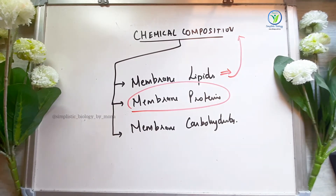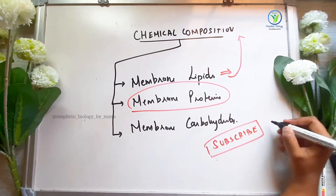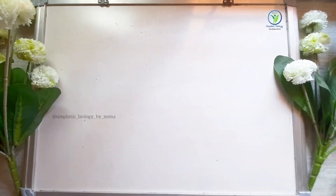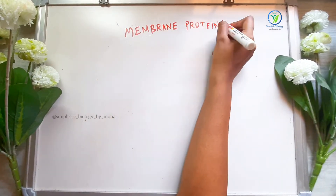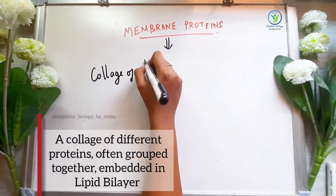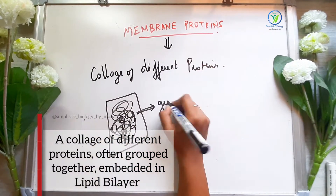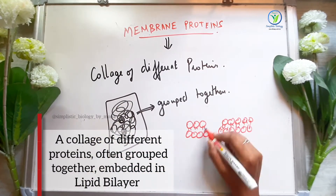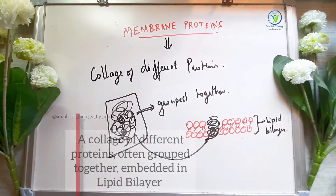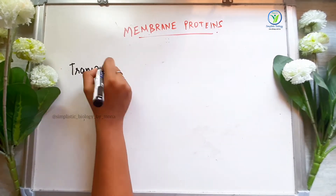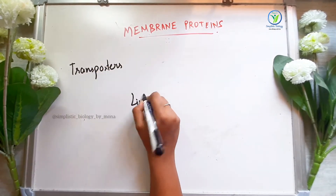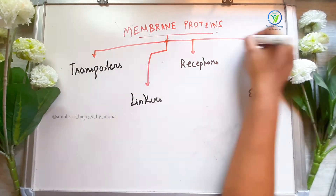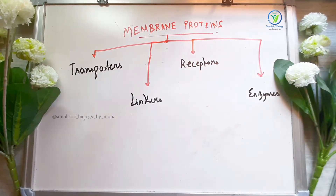In this video, you will see membrane proteins. What are membrane proteins? A membrane protein is a group of proteins associated with the lipid bilayer membrane. This membrane protein may be any type: transporters, linkers, receptors, or enzymes. These are classified based on their functions.